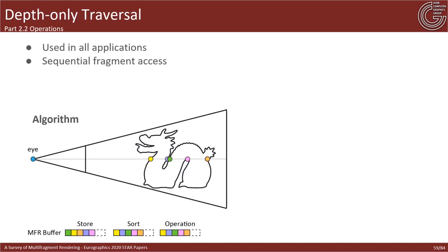Unidirectional depth traversal is by far the most common operation. Here the per-pixel fragment elements are accessed in sequential front-to-back or back-to-front order. Due to its simplistic nature it is used pretty much everywhere, with order-independent transparency and CSG being the most typical examples. The ideal data structures for this operation are array-based ones, as this operation works more effectively with contiguous element access, better cache locality, and support of binary search.